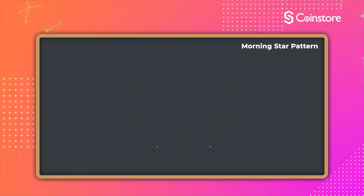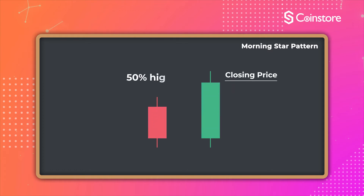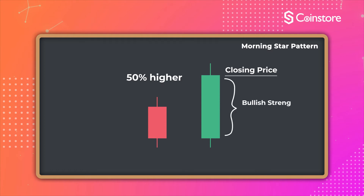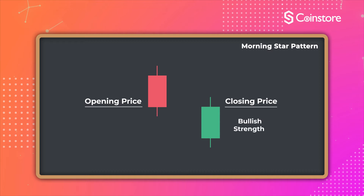Here are a few figures to help you visualize. If the closing price of the green candle exceeds the requirement of being 50% higher, this means that the bullish strength is relatively weak. If the closing price of the green candle is equal to the opening price of the previous red line, this means that the bullish strength is strong.